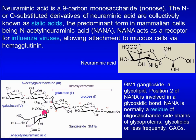Position 2 of NANA is involved in the glycosidic bond. NANA is normally a residue of oligosaccharide side chains of glycoproteins, glycolipids, or less frequently glycosaminoglycans. NANA acts as a receptor for influenza viruses, allowing attachment to mucus cells via hemagglutinin.